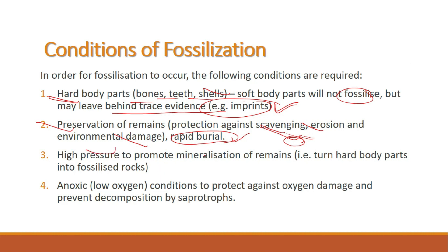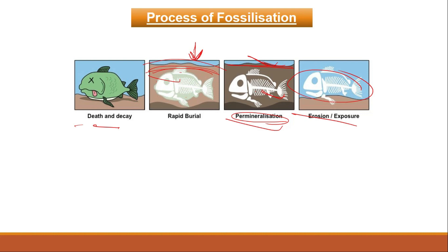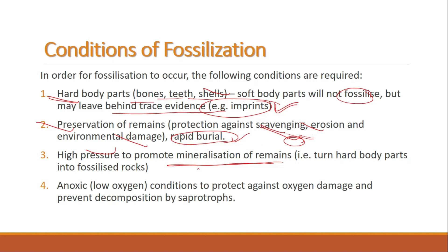The third condition is high pressure for the process of mineralization of remains. We saw that permineralization is the third stage of fossilization — high pressure is needed to replace organic material with minerals and turn the hard body parts into fossilized rock. The fourth condition is anoxic conditions — meaning low oxygen conditions — so as to protect the remains against oxygen damage and prevent decomposition by saprotrophs.